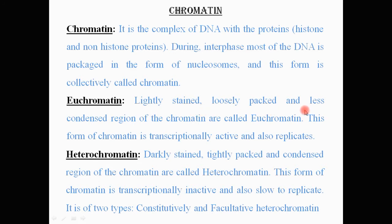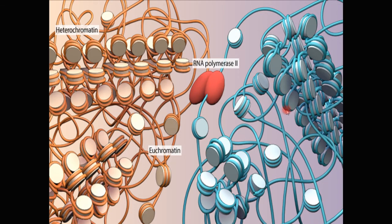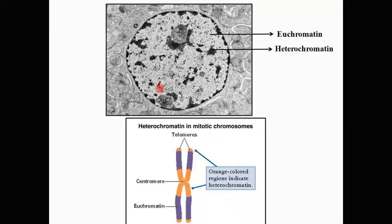The lightly stained, loosely packed, and less condensed region of chromatin is called euchromatin. This form of chromatin is transcriptionally active and also replicates. Since euchromatin is lightly packed, it is more accessible to both the replication and transcription machinery. Whereas heterochromatin, being tightly packed, is less accessible to both the transcription and replication machinery.